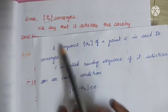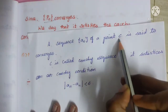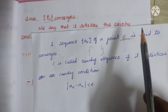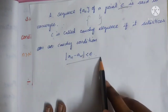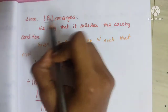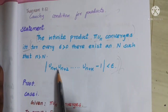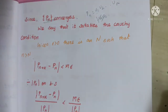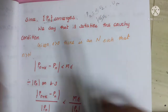The Cauchy condition: a sequence An is said to be convergent, called a Cauchy sequence, if for every epsilon greater than 0 there exists N such that the modulus of An minus Am is less than epsilon. We say Pn equals U1 · U2 · ... · Un, and P(n+k) equals U1 · U2 · ... · U(n+k). So Pn satisfies the Cauchy condition: modulus of P(n+k) minus Pn is less than M · epsilon.